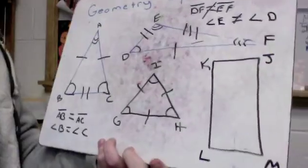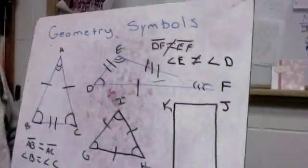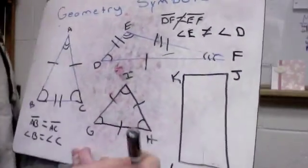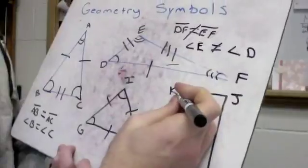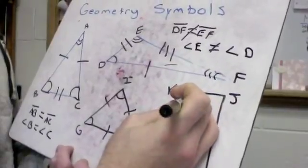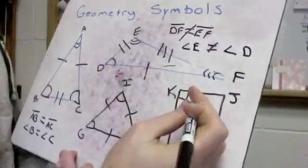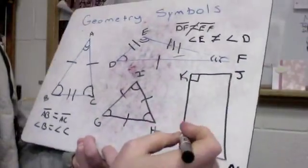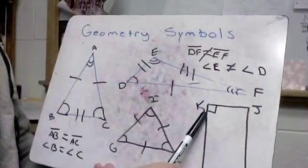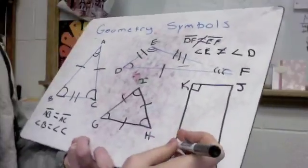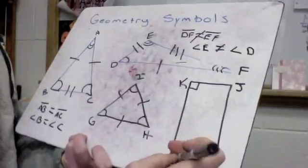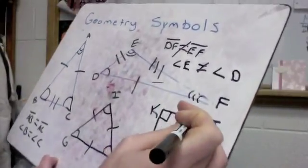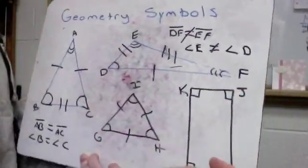This last one — I drew a rectangle here. Some things you might see: you might see this little right angle symbol. That just means it's a right angle. They may just put it in one corner, but we could put it in all the corners, meaning we've got all right angles.